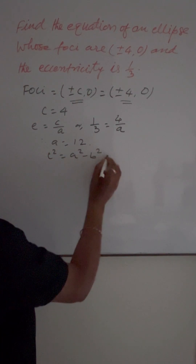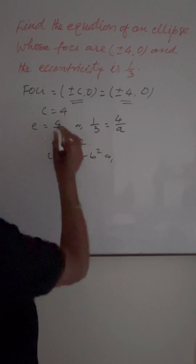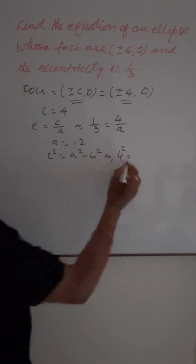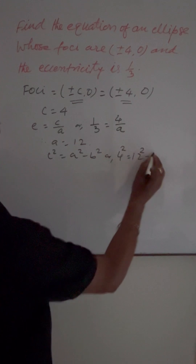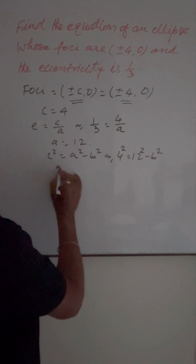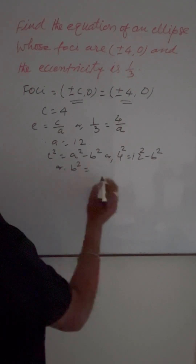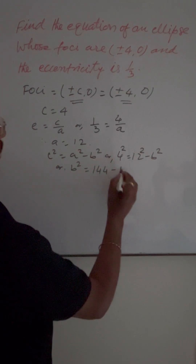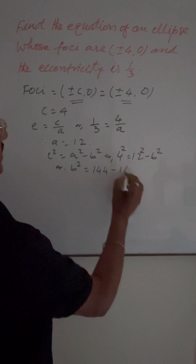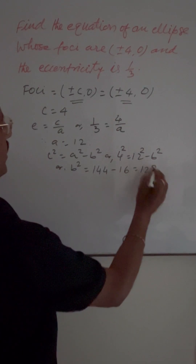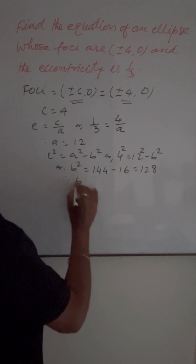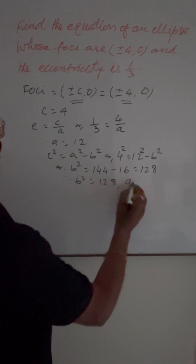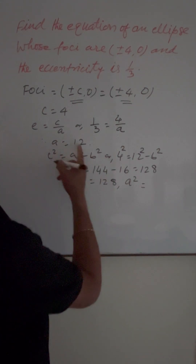We also know the formula c square is equal to a square minus b square. So c square means 4 square equals a square means 12 square minus b square. Therefore b square is equal to 12 square, that is 144, minus 4 square, which is 16. This gives b square equal to 128. And we have a square equal to 144.